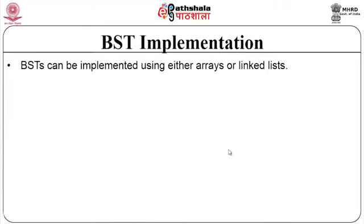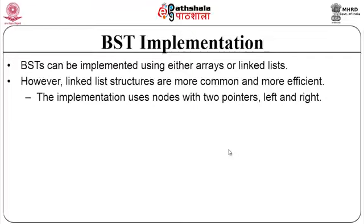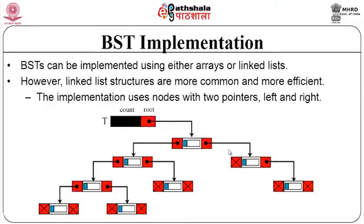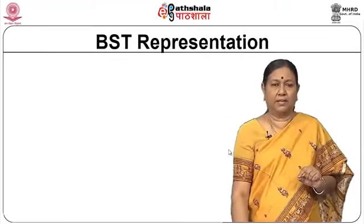A binary search tree can be implemented using either arrays or linked lists, but linked list implementation is more suited and efficient. Similar to the pointer implementation of a binary tree, it uses nodes with two pointers — left and right — with a head node pointing to the root, where left points to the left subtree and right points to the right subtree.